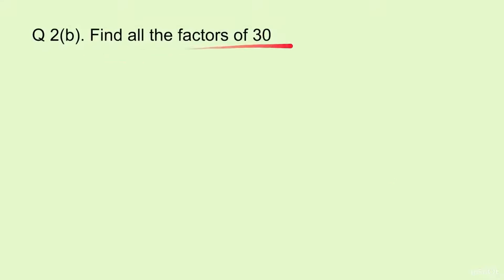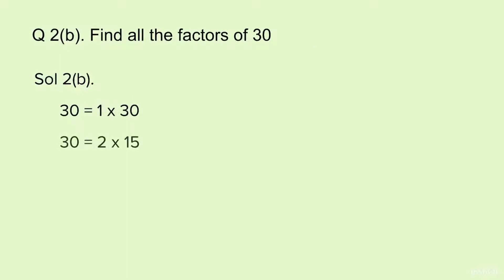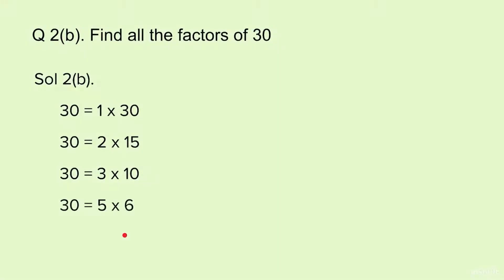Part B: Find all the factors of 30. To find the factors of 30, first we write 30 = 1 × 30. Then 30 = 2 × 15. Then 30 = 3 × 10. Now 30 cannot be written as multiplication of 4, so we check with 5. 30 = 5 × 6. After 5, we have 6, which is already there in the list, so we will not check any further.